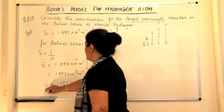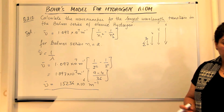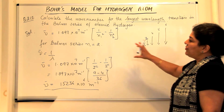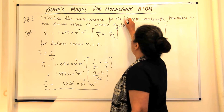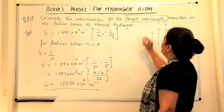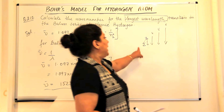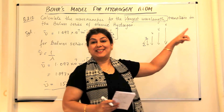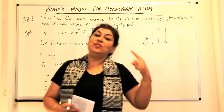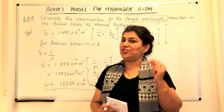So that's your answer — the wave number would be 1.5236 × 10⁶ meter inverse. The only trick here was where the question wanted you to calculate for the longest wavelength. Your tendency would be to calculate between 2 and 6, but actually it is between 2 and 3, because wave number is the inverse of wavelength. That was the only catch here.